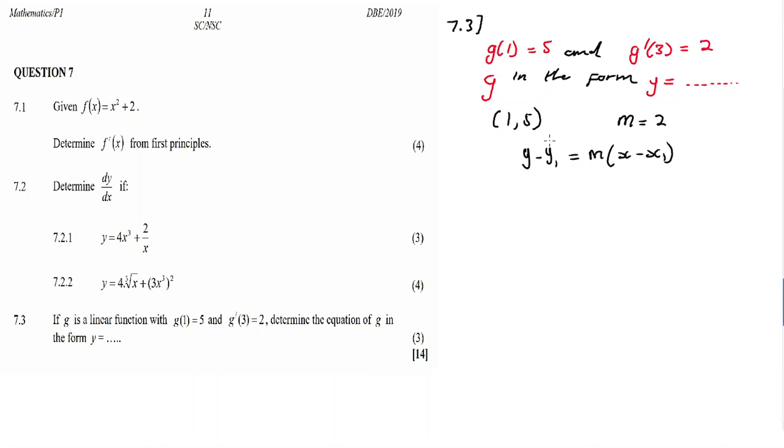A linear line is found using this equation where (x1, y1) is a point and m is a gradient, and these are the only requirements for finding an equation of a straight line. It's a point and a gradient. Now let's substitute. Y minus y1 is 5, m is 2, x minus x1 is 1. Now we simplify. y minus 5 equals 2x minus 2. y is equal to 2x minus 2 plus 5. y is equal to 2x plus 3.